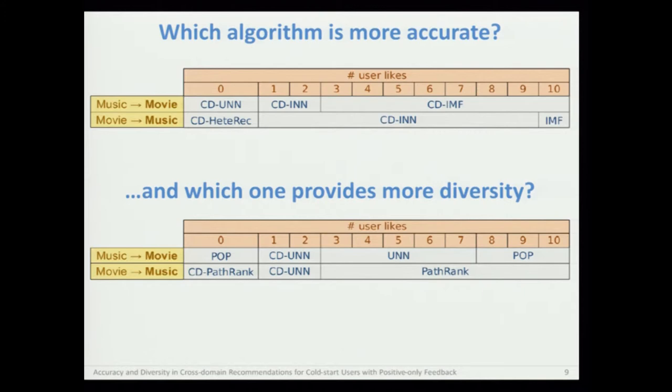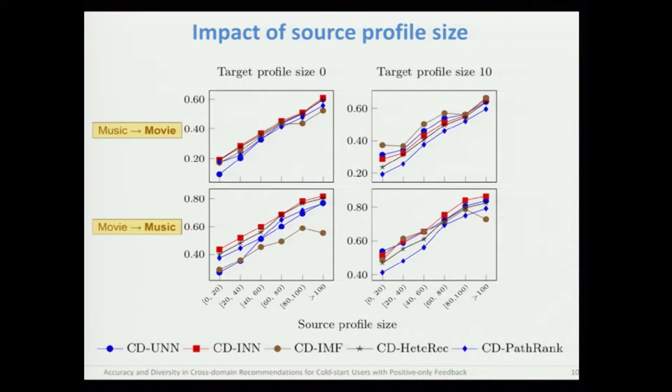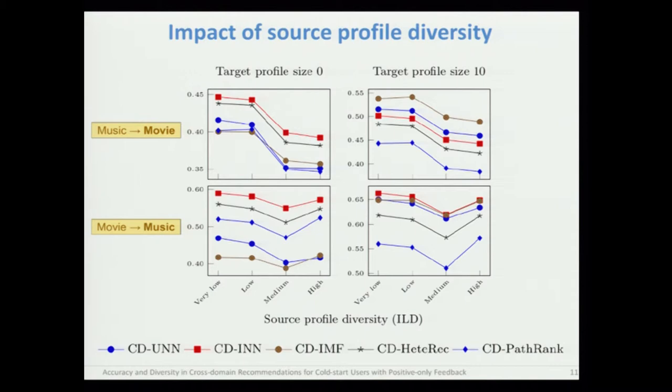Finally, we evaluated the correlation between the source profile size and the recommendation quality. As shown in these charts, there is a directly proportional relationship between these two variables. Conversely, for diversity, it turns out that a more diversified source profile leads to worse recommendations — in particular in the movie domain when the music domain is the source domain.